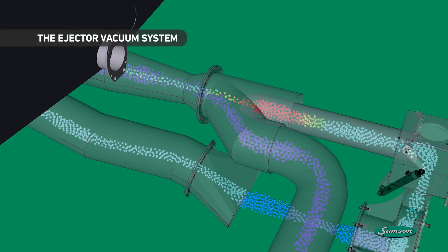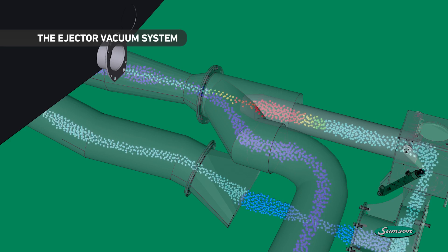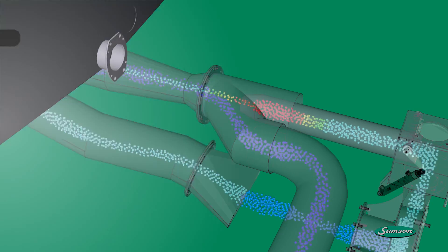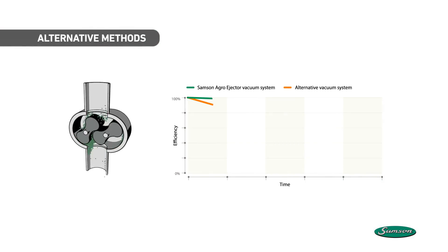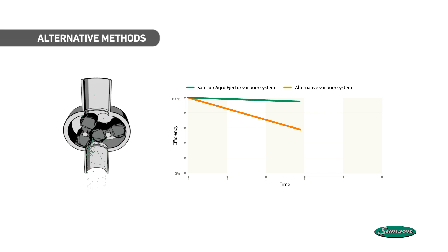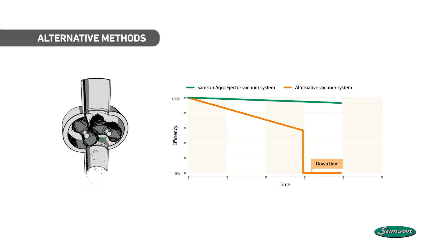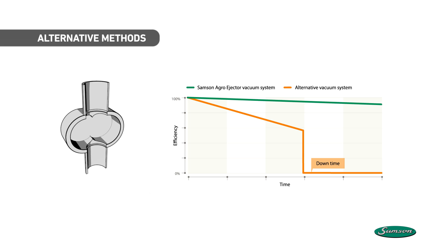The ejector system as a vacuum pump for liquid fertilizer has several advantages to alternative methods. Other technologies are sensitive to foreign objects in the fluid and will suffer a drop in efficiency over time and require expensive renovation.